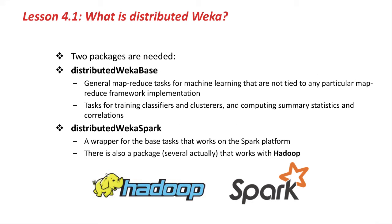The distributed Weka plugin is actually made up of two packages. First, there is something called distributed Weka base — a package that provides general MapReduce-style tasks for machine learning that are not tied to any particular MapReduce framework implementation. It includes tasks for training classifiers and clusterers and computing summary statistics and correlations from the data. A second package is needed to apply the base package within a particular implementation of the MapReduce programming model. In this lesson, we're going to be looking at an implementation for the Spark distributed processing environment, so we will need to install something called distributed Weka Spark as well. There are also packages that work with Hadoop, depending on which version or flavor of Hadoop you have installed.